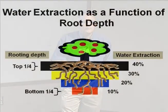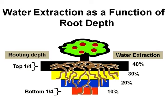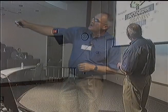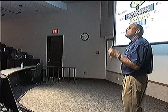Another thing to think about when we water is how deep are we watering? Most people are under the assumption that plants take up water at the same rate and the same amount throughout the rooting zone. That's not the case, as this shows. Forty percent of the water is extracted by most plants in the top quarter of their rooting zone.